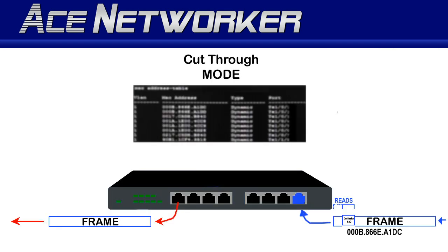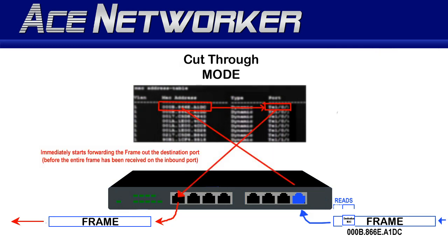Cut-through mode tries to forward an incoming frame as quickly as possible. When a frame arrives on a switch's interface, the switch reads only enough bits to discover the destination — specifically the destination MAC address field in the frame. It then quickly compares that address to its CAM table and opens a pathway to the correct destination port. Critically, the frame is sent to the destination port while bits are still being received on the original port.